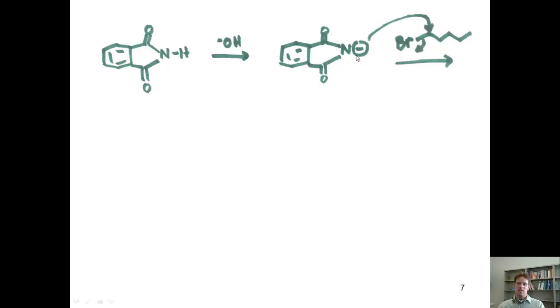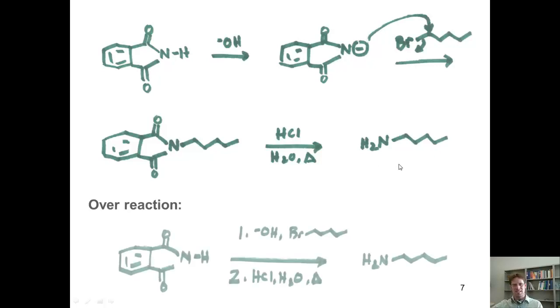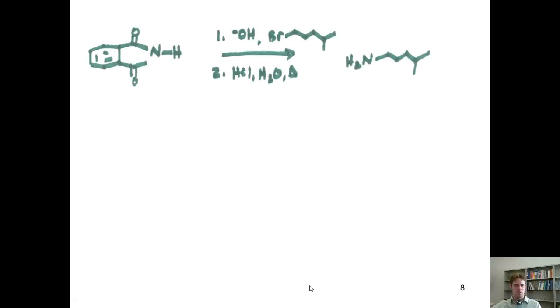This, then, makes it so that the nitrogen anion attacks the carbon bound to the bromine and kicks off bromide as a leaving group, giving me this intermediate. When I take this intermediate and react it with acid, water, and heat, it liberates my primary amine as the major product. So, what's the summary of this reaction? The overall reaction is phthalimide reacted in step one with hydroxide and pentylamine, and step two, acid, water, and heat.